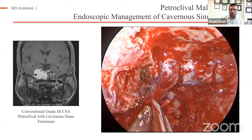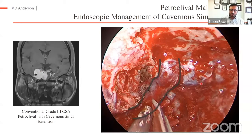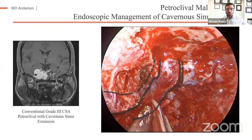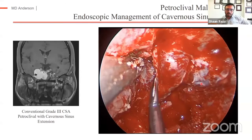There are additional compartments that need to be resected with these petroclival tumors. This is an example of a petroclival chondrosarcoma with involvement of the lateral cavernous sinus. Here the carotid artery is displaced anteriorly and completely skeletonized. V2 is going back to Meckel's cave. For a case like this, I make dural incisions on both sides of the carotid artery so that you have good proximal and distal control and can mobilize it. Then working within the lateral cavernous sinus with the sixth nerve going into the superior orbital fissure.